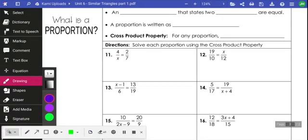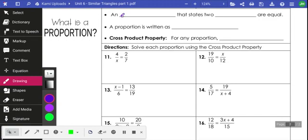So then we're going to talk about what is a proportion. A proportion is an equation, which means you have an equal sign, that states that two ratios are equal. So proportion would be like some of the ratios we've seen prior, set equal to each other. It's like a fraction equal to a fraction. A proportion is written as a/b = c/d. Cross product property: for any proportion, I can cross multiply, which means if I have a/b equals c/d, I can multiply a times d to equal b times c.